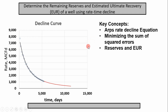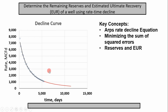Today we're going to determine the reserves and estimated ultimate recovery of a well using rate-time decline curve analysis. The rate-time decline curve is represented by a graph with production rate on the y-axis and production time on the x-axis. We fit a curve to the production data and then forecast it to determine reserves and EUR. We're going to actually take gas production data and do this.